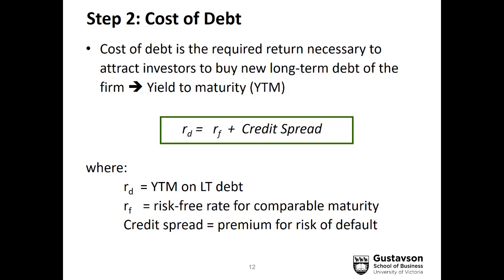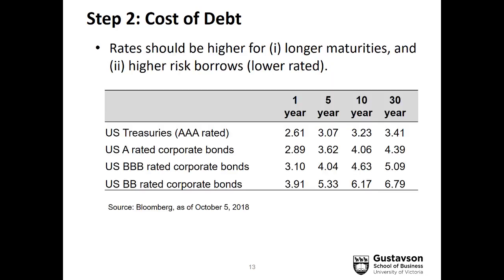Notice that the yield to maturity represents a risk-free rate plus a credit spread, where that credit spread is the premium for the risk of default. You can look on Bloomberg or other sources to find yields to maturity on securities with different maturities and different credit ratings. This data from October 2018 shows yields from one year to 30 years for U.S. Treasuries (triple-A), single-A rated bonds, triple-B rated bonds, and double-B rated bonds. As you go from one year to 30 years, the yield increases. As you go from triple-A to double-B, the yield also increases. If your company is triple-B rated, you would look at the 30-year rate for its cost of debt.